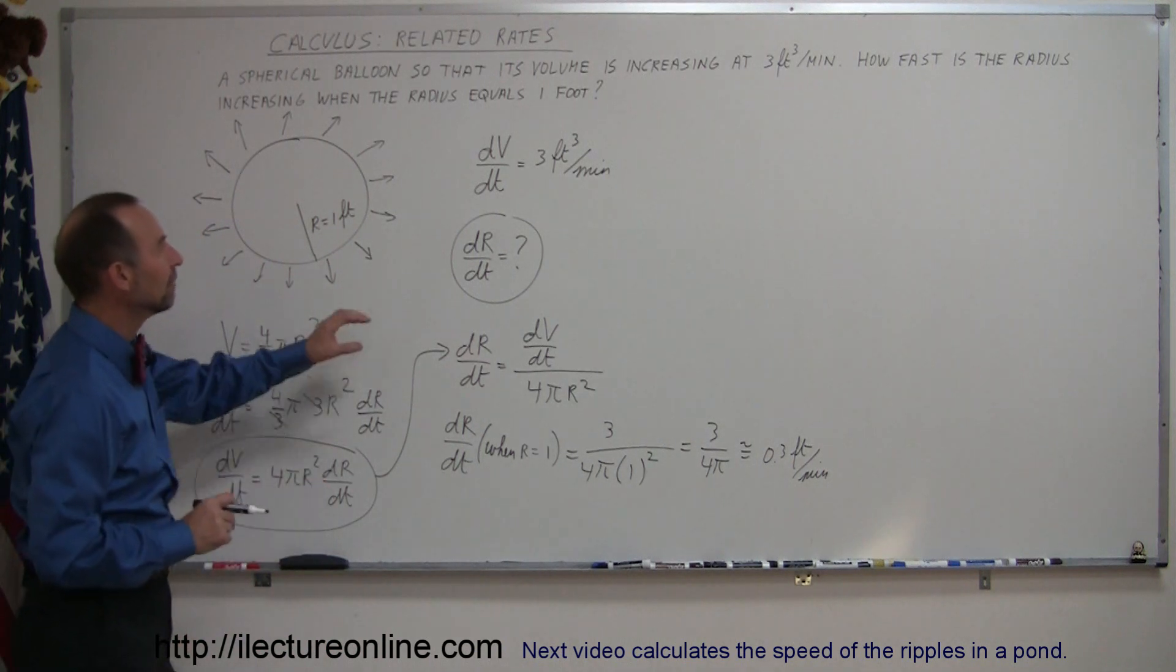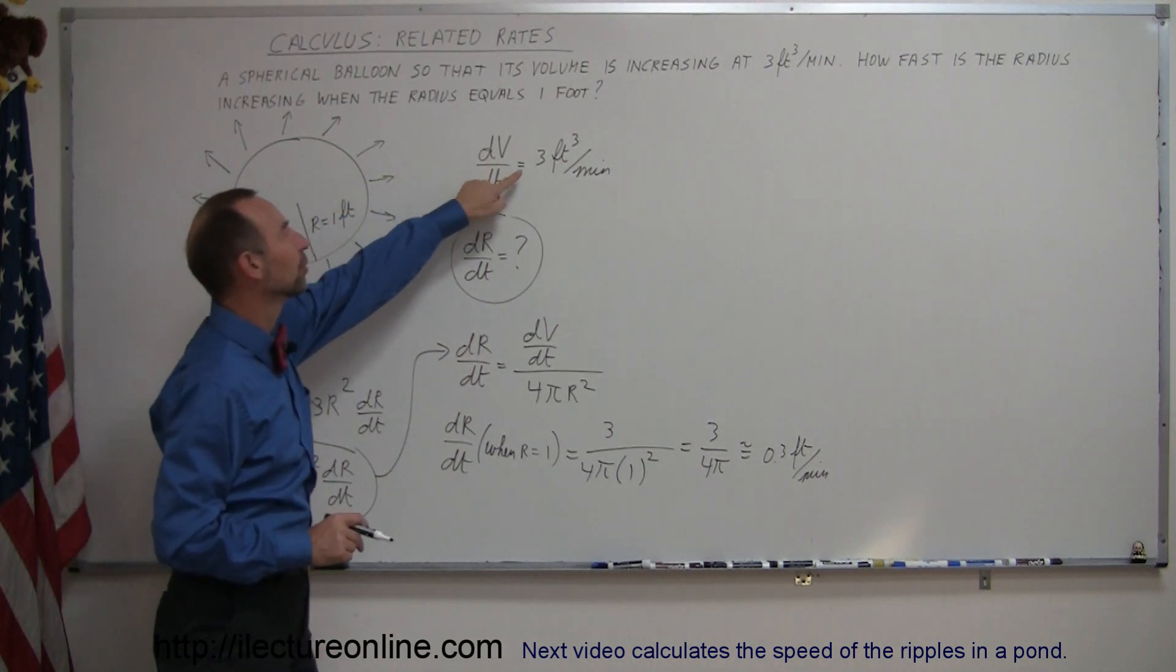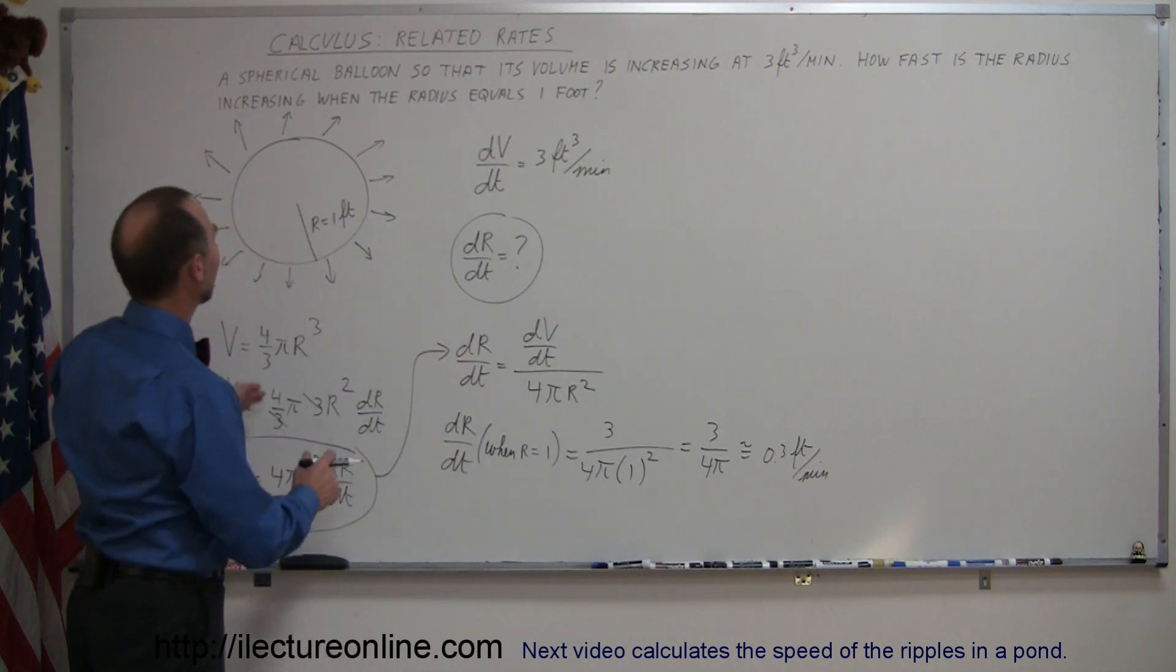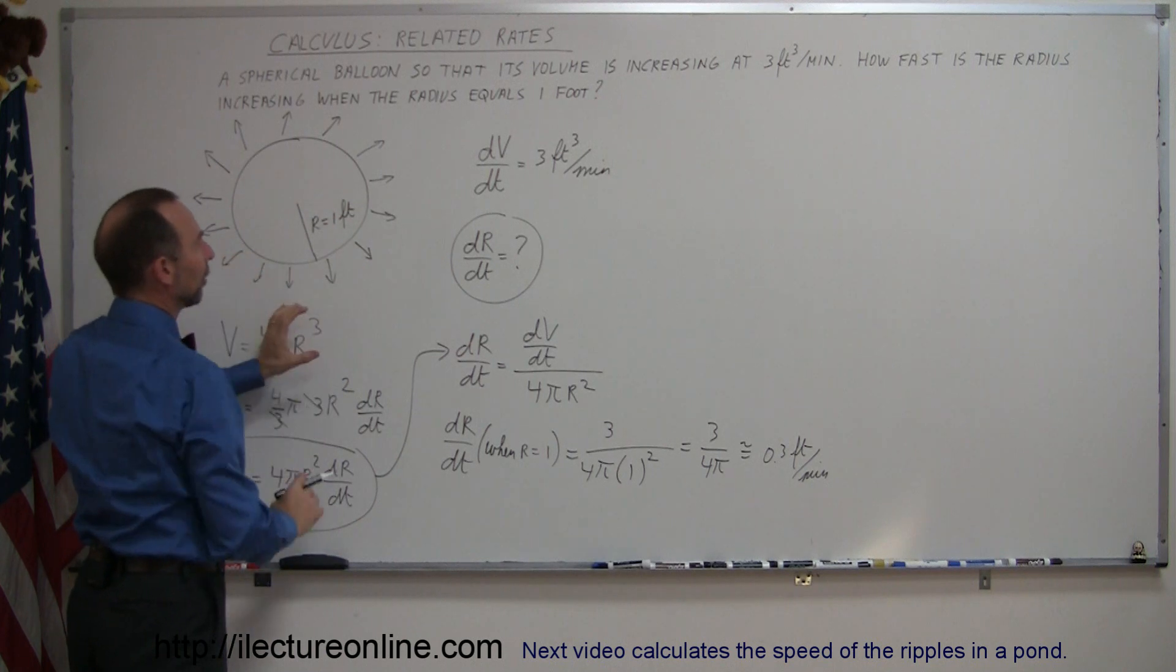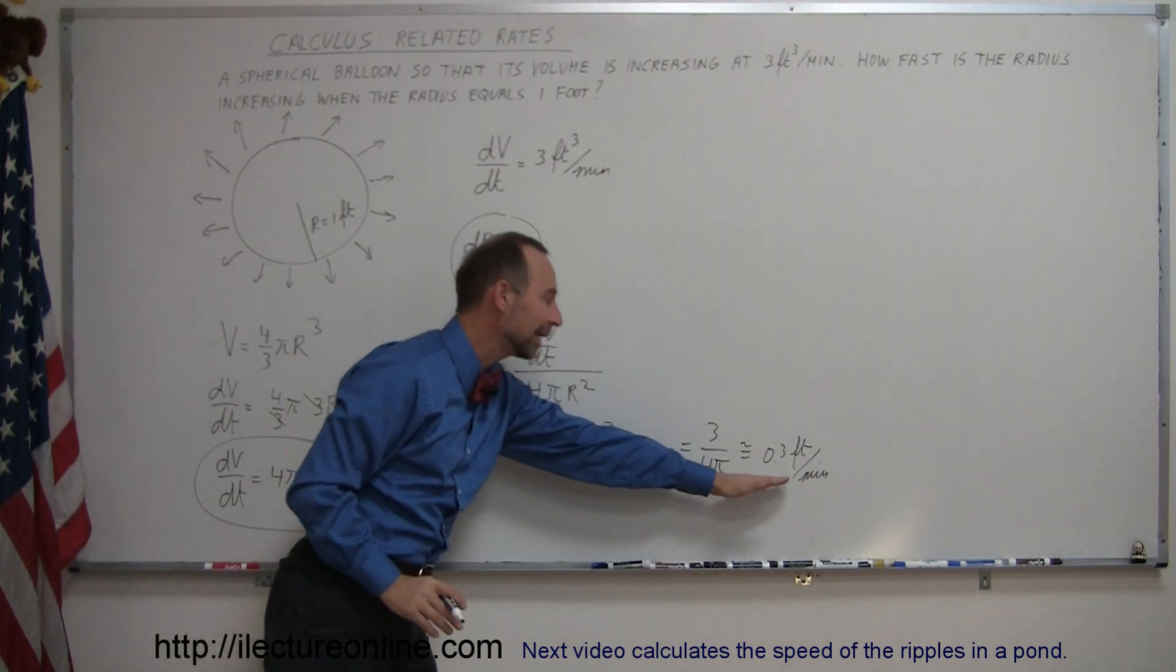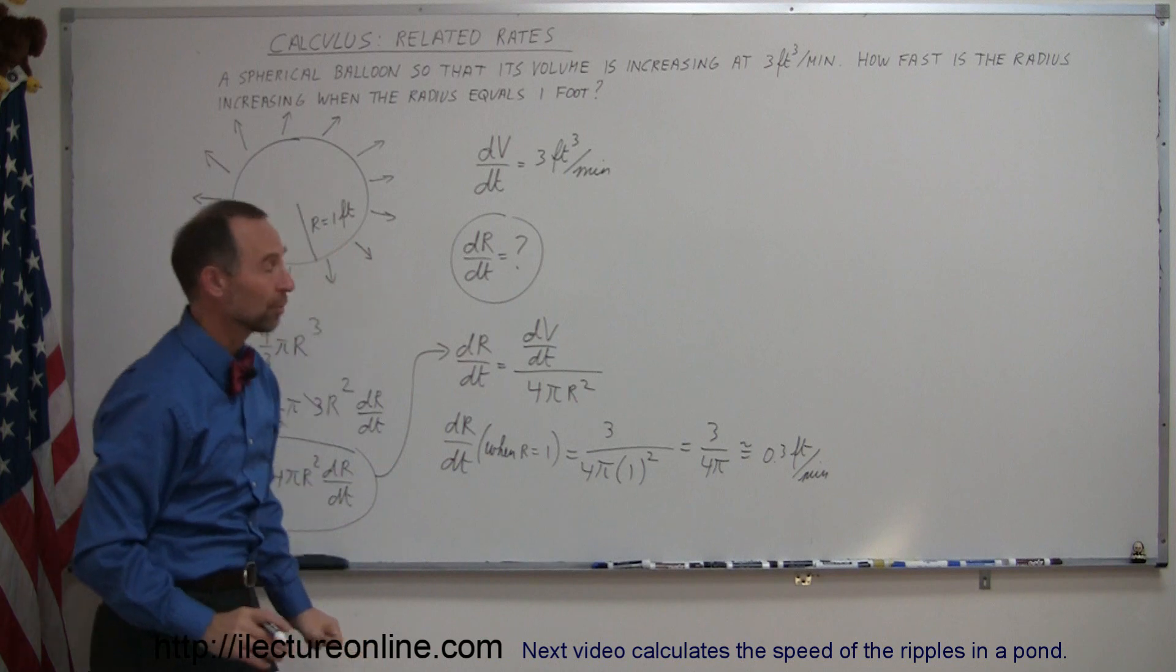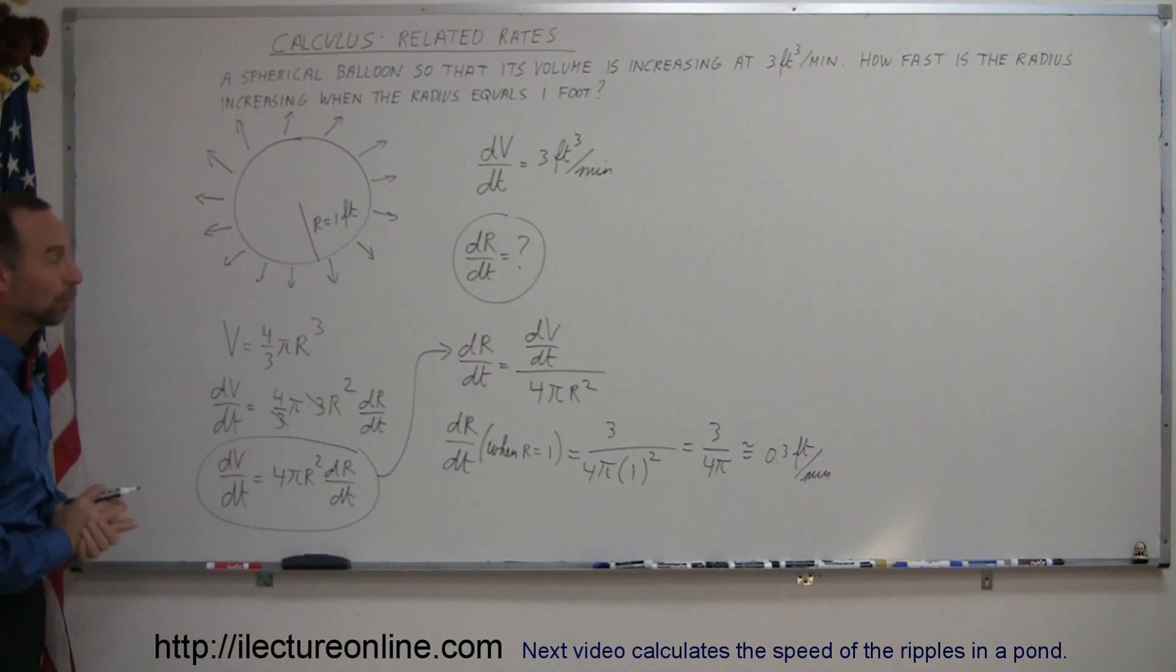So that means that when the volume is changing at a rate of 3 cubic feet per minute, and at the moment that the radius is 1 foot, the radius is also increasing, but this time at a rate of 0.3 feet per minute. And that's how you do a problem like that.